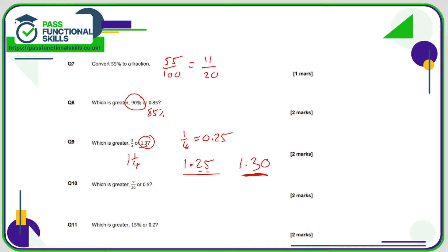So therefore 1.3 is greater than 5 over 4. Question 10: 9 over 20. I'm going to convert that into a percentage. Remember that a percent is a fraction which is out of 100. Percent means out of 100.